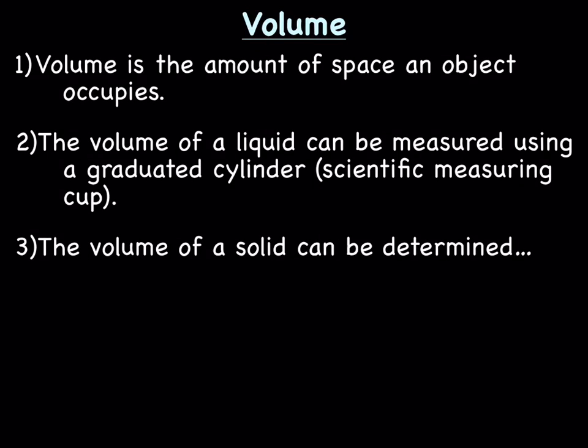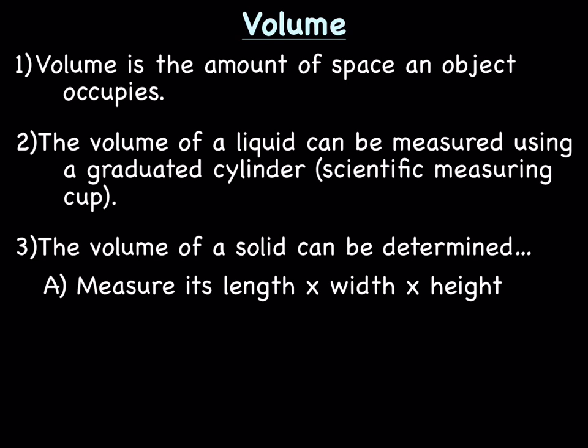The volume of a solid can be determined in two different ways. First, you can measure its length, width, and height and multiply them together—length times width times height—to get the volume. That would be for a regularly shaped solid, like a square or something.